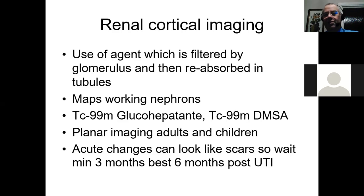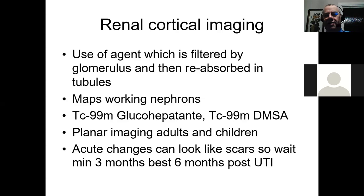Moving on to renal cortical imaging — we discussed this a little in the renal talk, but here are more examples of detail for pediatrics. DMSA is filtered by the glomerulus and then reabsorbed in the tubules, effectively mapping working nephrons. Glucoheptonate is used in North America and DMSA is used in the rest of the world; they're very similar except that you get much better reabsorption with DMSA. For children, planar imaging with DMSA is quite sufficient because children are small, so attenuation is less of an issue. Acute changes can look like scars, so we ask patients to wait after a last UTI.